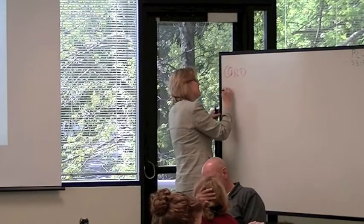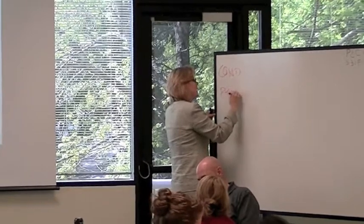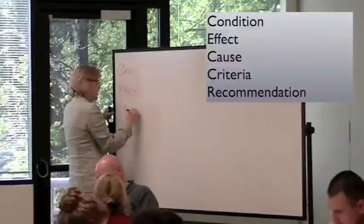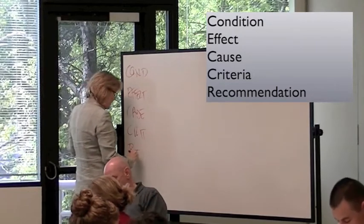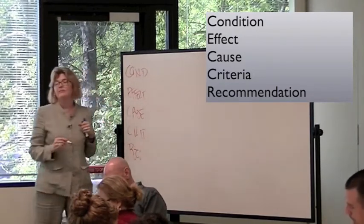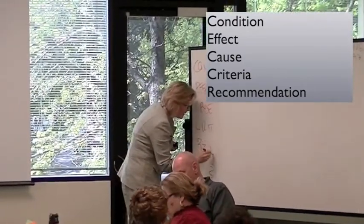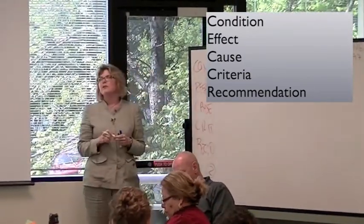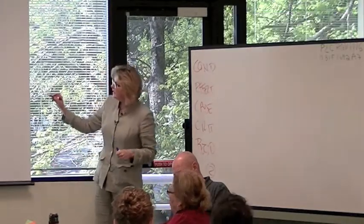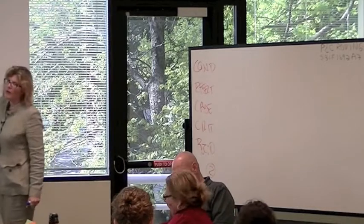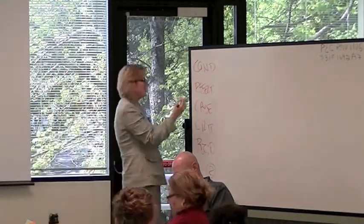So each of these elements answers a question for the reader that they need answered in order to believe our recommendation, and I believe that there are two recommendations. The GAO doesn't say this but I think it is good to conceptualize that there are two recommendations. One, you will see this little line right here, one that resolves the cause and one that resolves the condition because we brought up two problems.